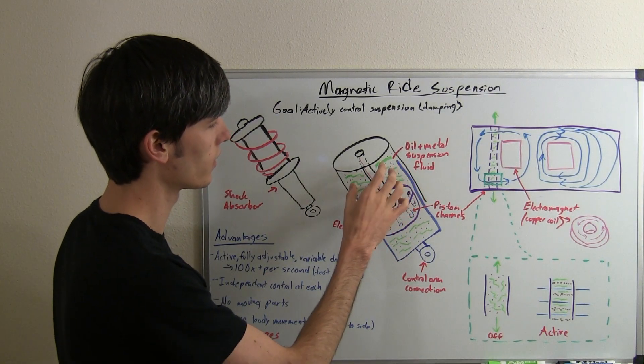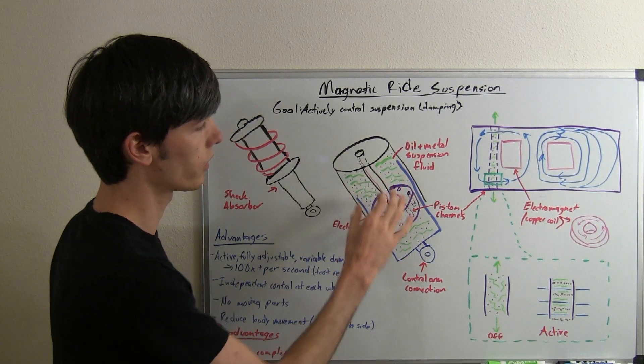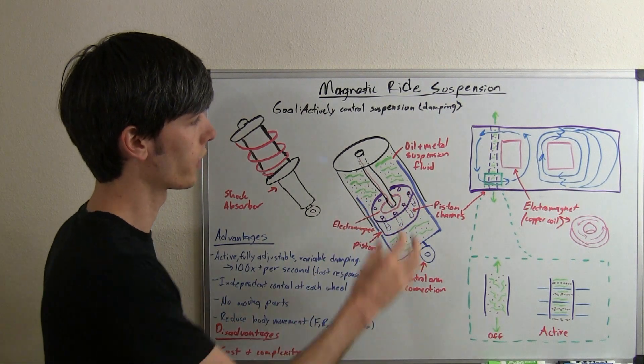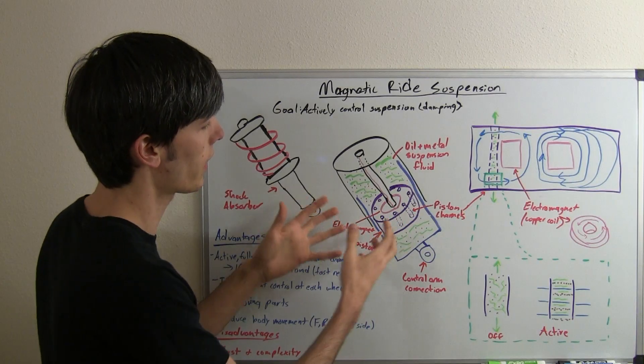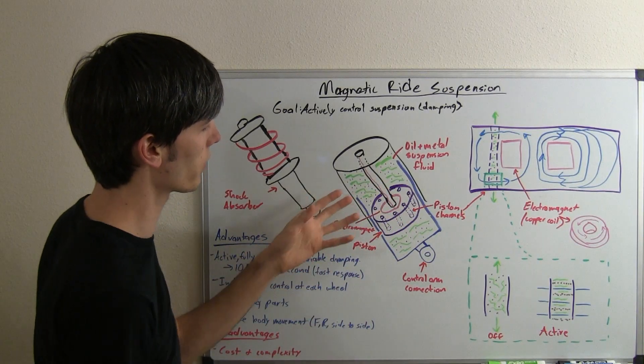What happens is, instead of just a regular oil, we have this oil within the shock absorber, and there's also tons of little tiny metal particles, and these can be magnetically attracted because they're metal.